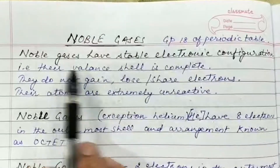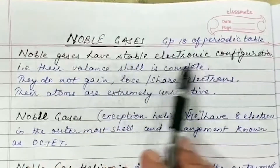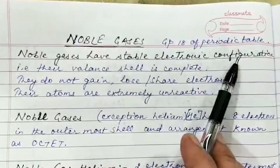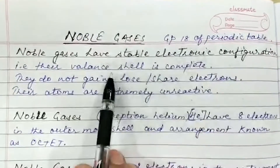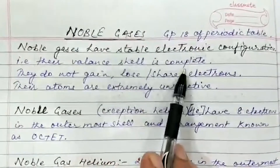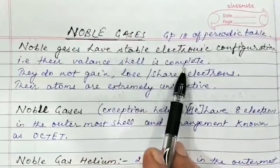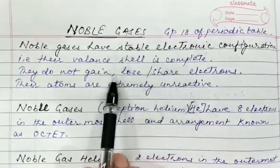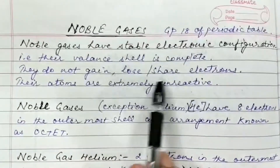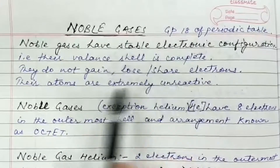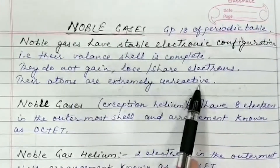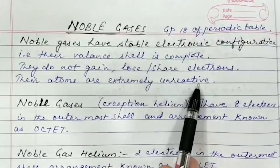Noble gases have stable electronic configuration. That means their valence shell is complete. They do not gain, lose, or share electrons. Their atoms are extremely unreactive.